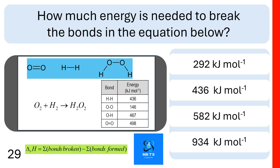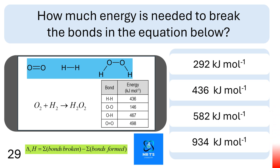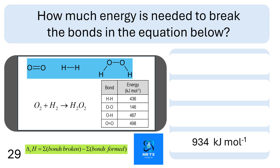Question twenty-nine: how much energy is needed to break the bonds in the equation below? Using the bond energy structures of the three molecules, is it 292, 436, 582, or 934 kilojoules per mole? The correct answer is 934, because there is one mole of H-H bond and one mole of O=O double bond broken.